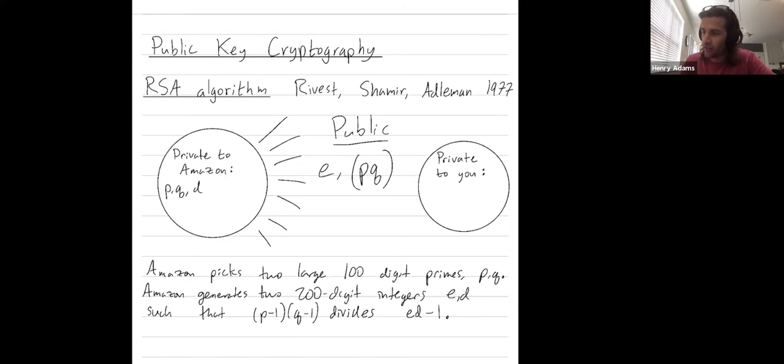And if you could factor P times Q into the product of P times Q, then you could use that to break this crypto system. You could now start decrypting messages that were intended for Amazon. And maybe I should say that D is the real private key. So D is all that's needed to decrypt.